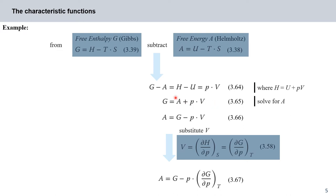We can solve for free energy A to get equation 366, and substitute V using one of our previously derived relationships. This gives us an expression relating A to the change in free enthalpy delta G during volumetric expansion — that's very useful.